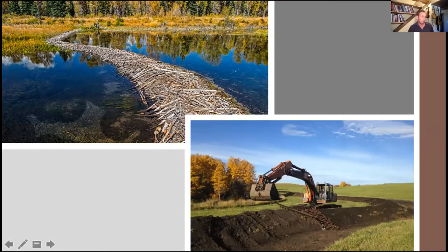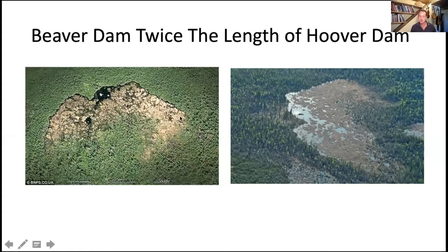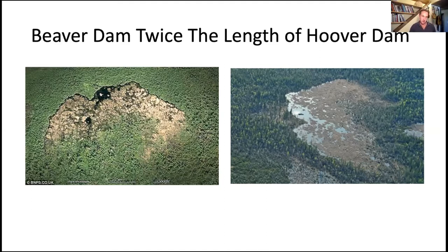This is one of the swales we built on our property — the function is the same: slow water down, spread it out, get it into the ground. Most people think beaver dams are small, but Alberta actually has the largest beaver dam yet found on earth — over 850 meters long, or about 3,000 feet — located in northern Alberta. It's multiple families of beavers that have connected several dams together, slowing water, spreading it out, infiltrating the ground, and creating their own wetland.